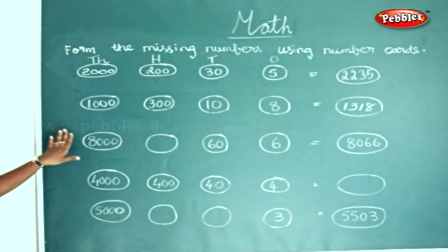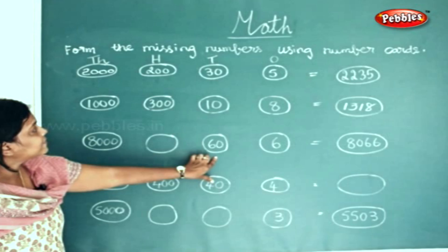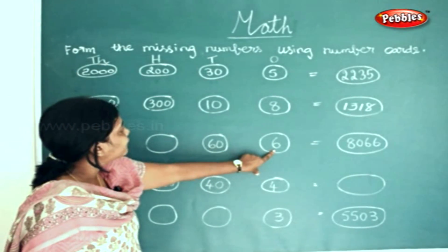Now the next sum: you have 8000, you have a gap in the hundreds place, and in the tens place you have 60, and in the ones place you have 6.